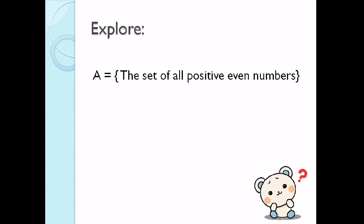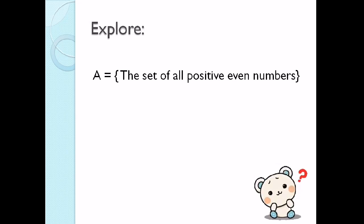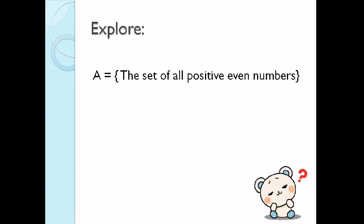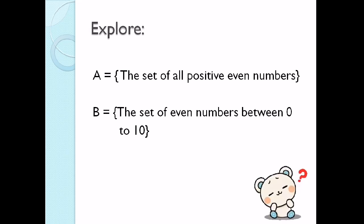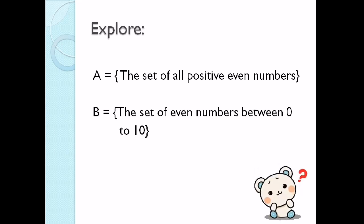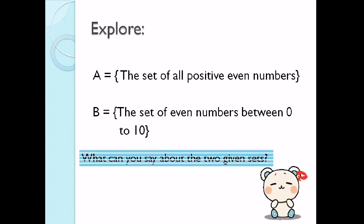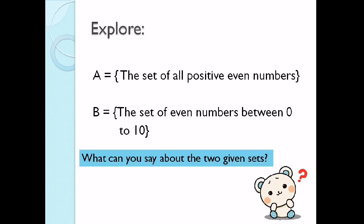Given set A, the set of all positive even numbers — those are numbers divisible by 2. And then set B is the set of even numbers between 0 and 10. So what can you say about the 2 given sets?